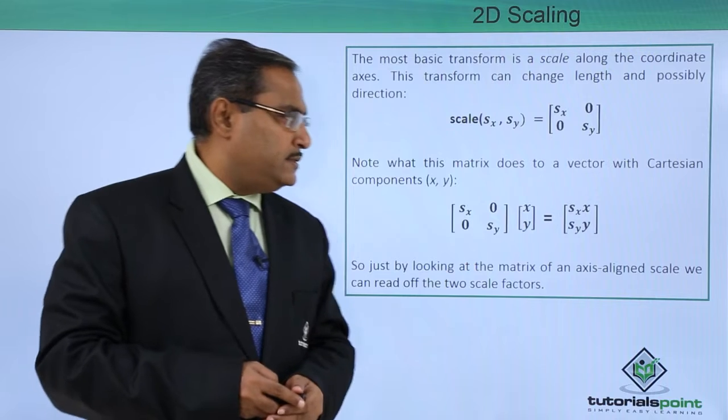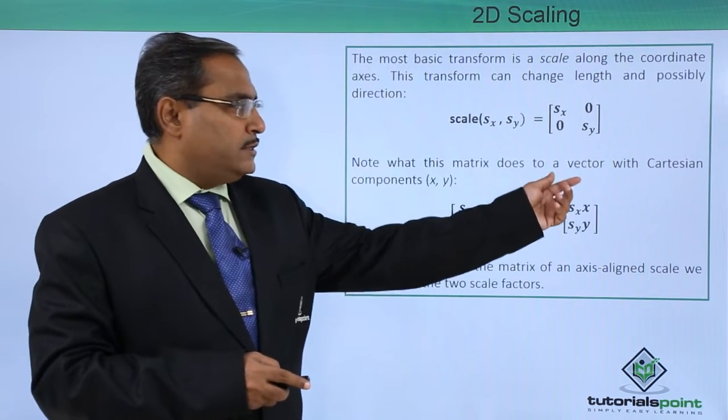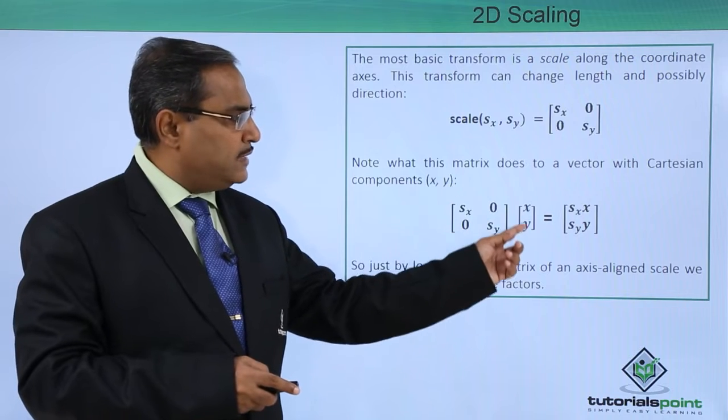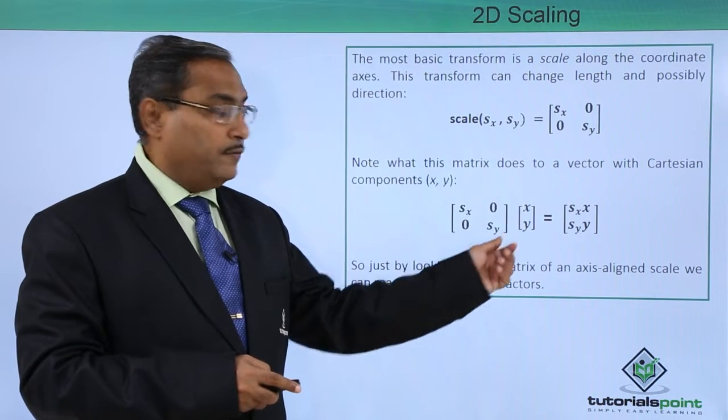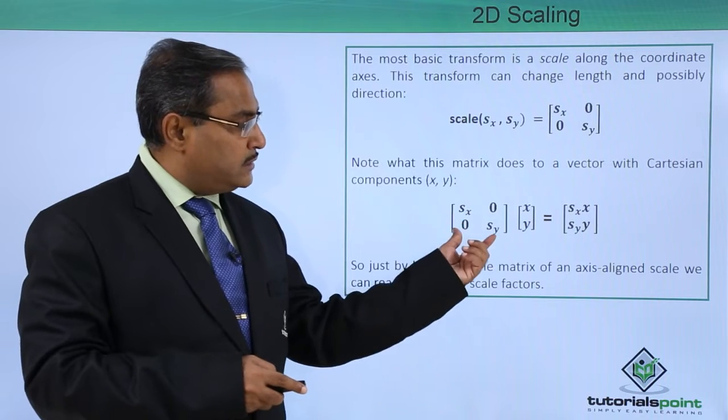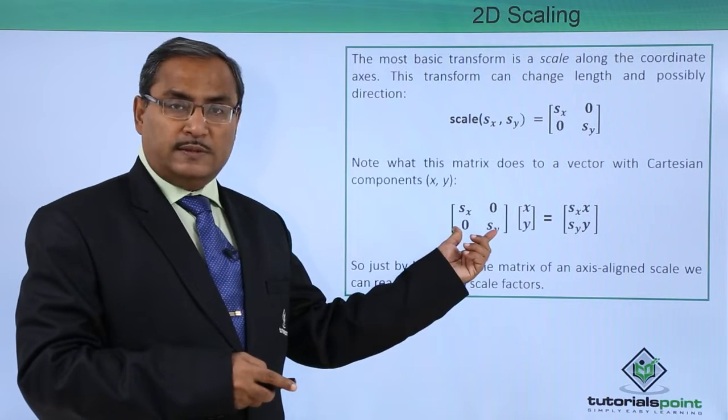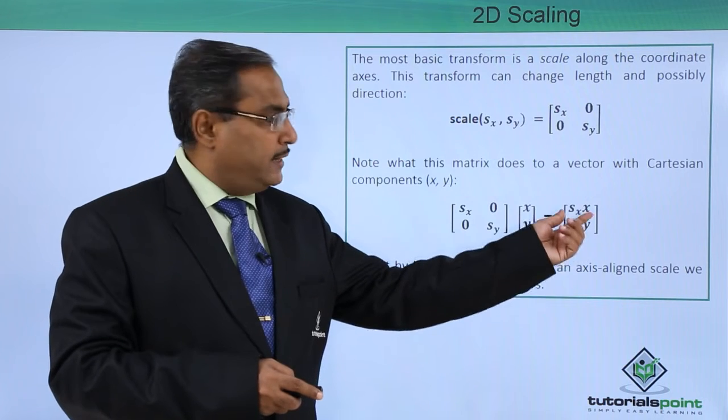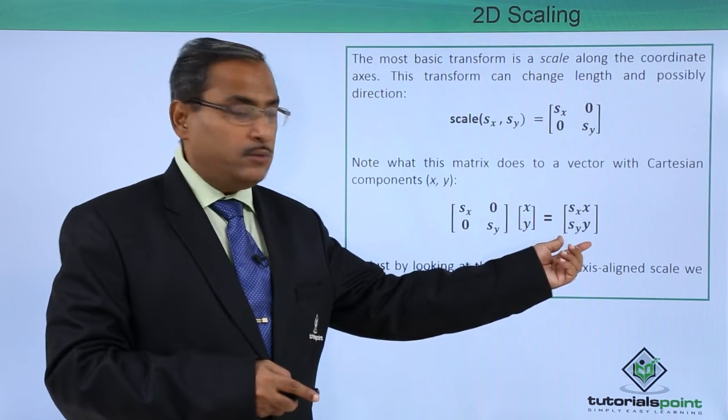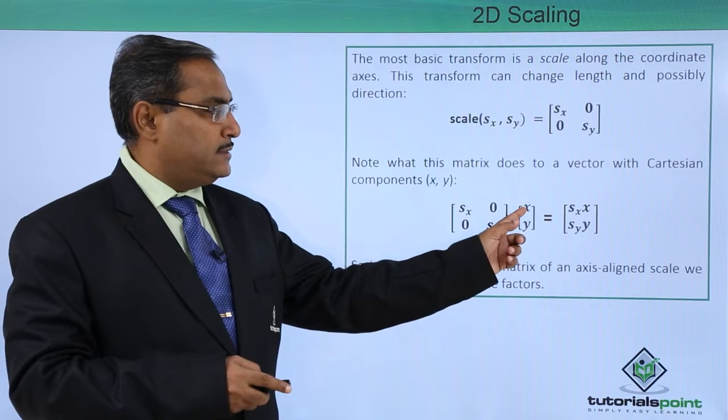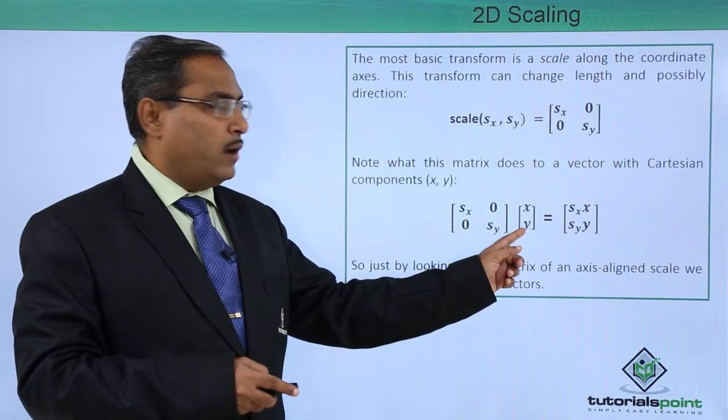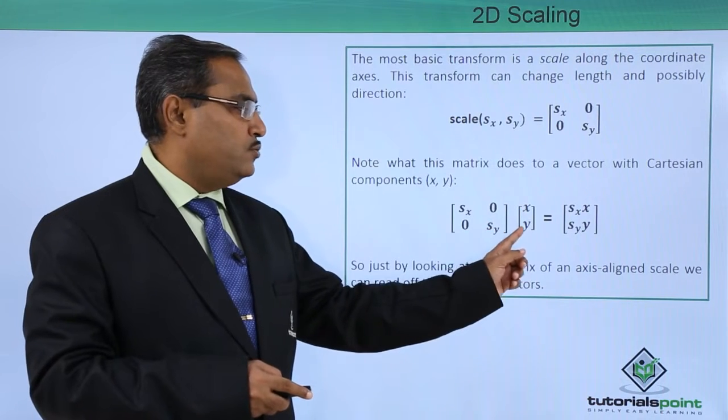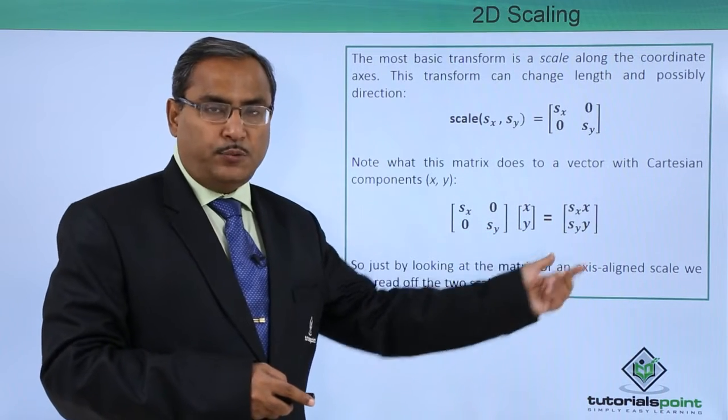Note that this matrix does to a vector with Cartesian components like x y. Let us suppose x and y are the two coordinates of one point. This scaling matrix will be multiplied and we are going to get the scaled coordinates for x and y. Sx into x plus 0 into y, and then 0 into x plus Sy into y. We are getting this one as the product output.